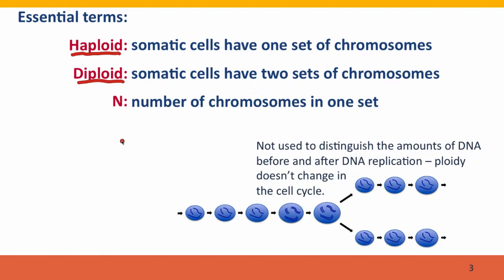N is the number of chromosomes in one set. For us, N equals 23, and because we're diploid, we say 2N equals 46 — 46 total, including the autosomes, and then either two X chromosomes if we're female, or an X chromosome and a Y chromosome if we're male.